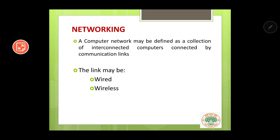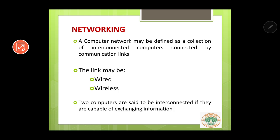The communication links may be wired or wireless. Two computers are said to be interconnected if they are capable of exchanging information. So if the computers are capable of exchanging information, then we can say that the computers are interconnected.